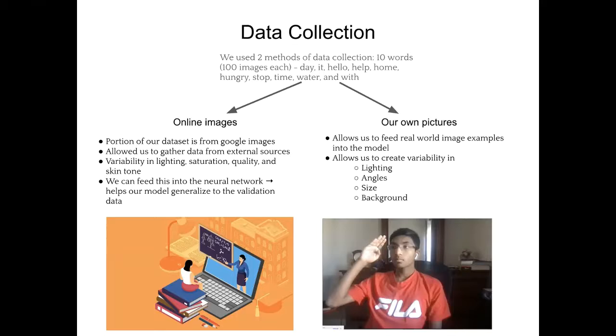And because of this, we can feed it into our neural network, which helps our model generalize to the validation data. For our own pictures, we wanted to do this because it allows us to feed real-world image examples into the model. And this allows us to create variability in lighting, angles, size, and background in whichever way we wanted, which is something that you can get from online images.